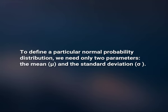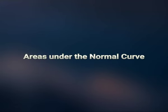There is no single normal curve but rather a family of normal curves. To define a particular normal probability distribution, we need only two parameters: the mean denoted by mu and the standard deviation sigma. Areas under the normal curve: no matter what the values of mu and sigma are for a normal probability distribution, the total area under the normal curve is 1, so that we may think of areas under the curve as probabilities.